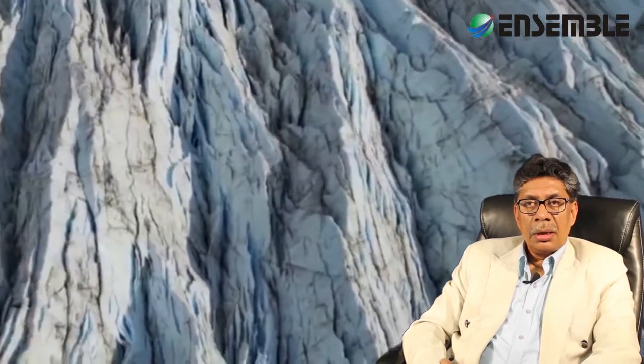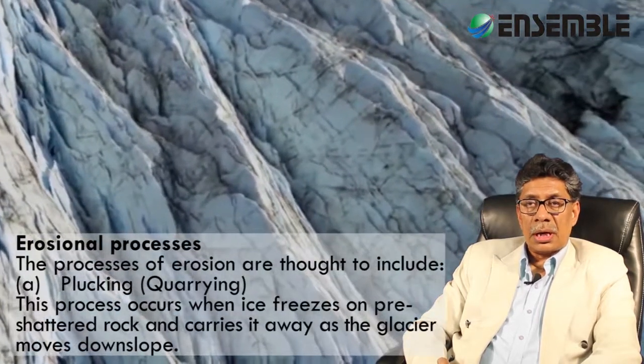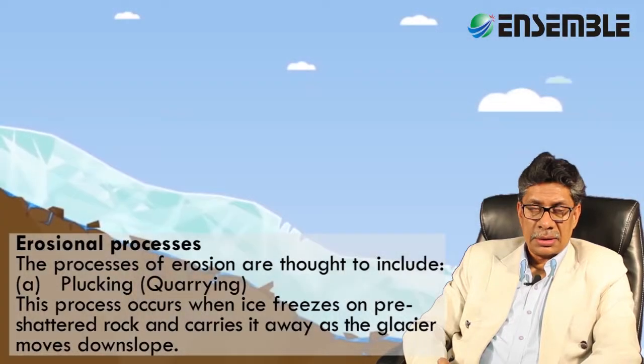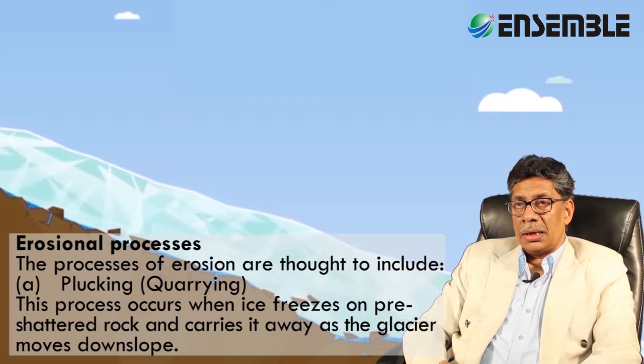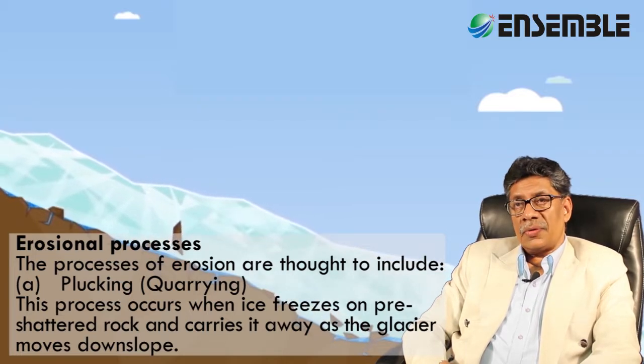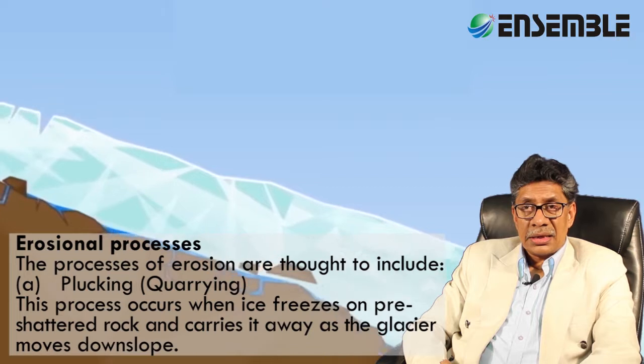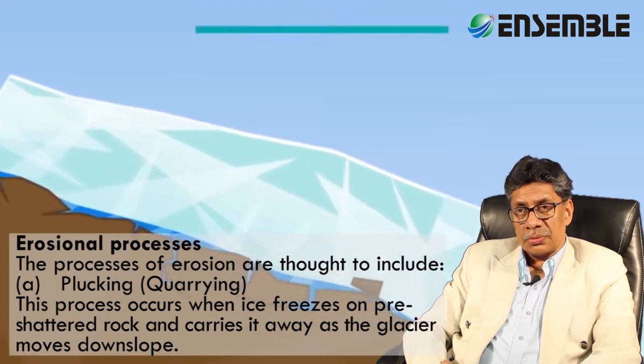Both types of glaciers — valley glaciers as well as mountain glaciers — move. In the process of movement, glaciers cause both erosion and deposition to take place. The processes of erosion are thought to include plucking, also called quarrying. This process occurs when ice freezes onto pre-shattered rock and carries it away as the glacier moves downslope.